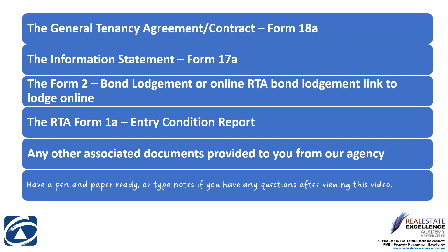You should have the following documents in front of you: the Form 18A General Tenancy Agreement contract, the RTA Form 17A information statement. Bond information and RTA lodgement links to lodge your bond online direct to the RTA, or the Form 2 bond lodgement, will be provided by our agency. The RTA Form 1A entry condition report will be provided to you on or before the day you take possession of the property — usually the day you pick up the keys. Any other associated documents from our agency will be included as well.